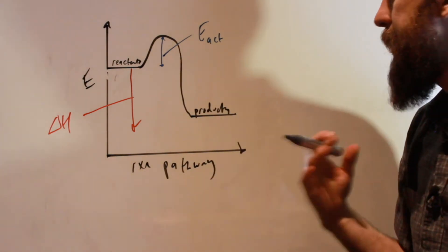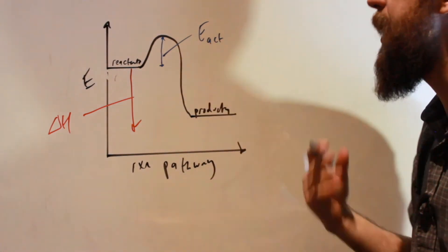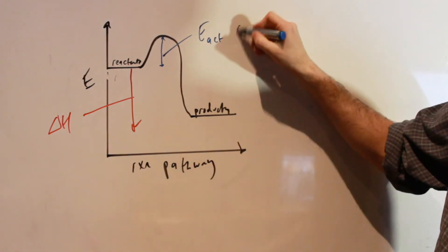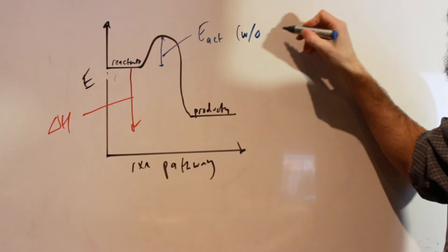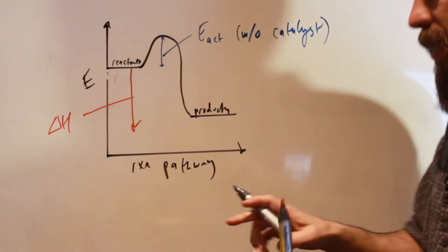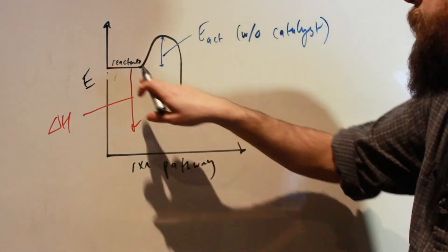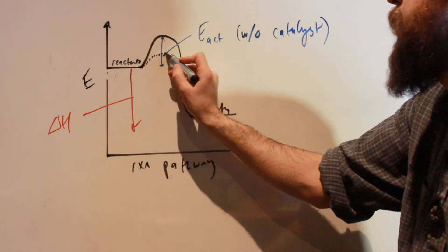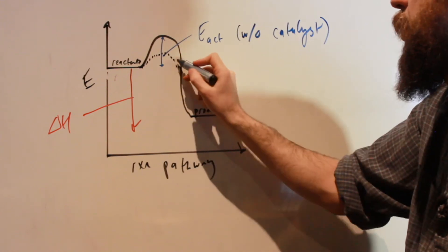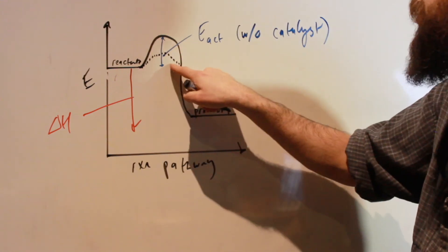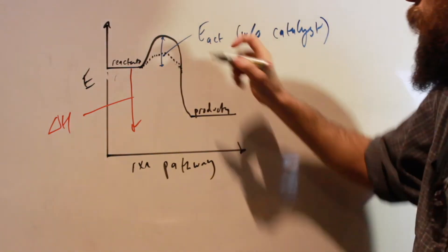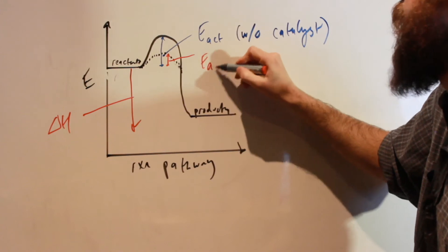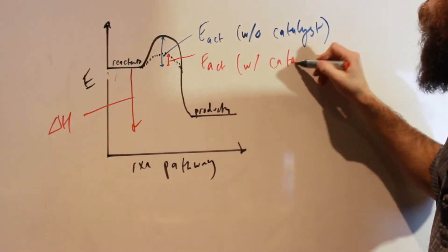What the catalyst does is it lowers the activation energy needed for this reaction to occur. This is the activation energy without a catalyst. If we add a catalyst, the delta H doesn't change — what changes is just the energy needed for the reaction to occur, the activation energy. So the activation energy with a catalyst is lower.